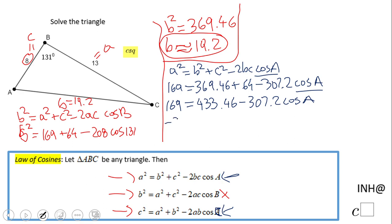To solve for cosine A, we're going to divide both sides by negative 307.2. We have negative 264.46 over negative 307.2. The negatives cancel out, so we have 264.46 over 307.2.